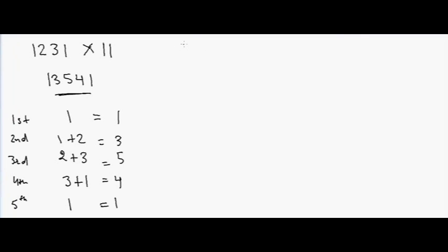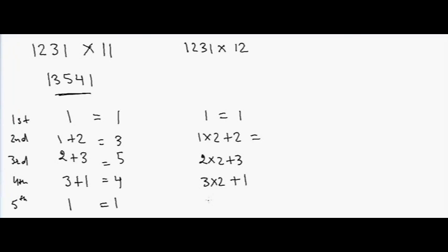Again, if I have 1231 and I want to multiply by 12: first digit is 1, then 1×2 plus 2 is 4, then 2×2 plus 3 is 7, then 3×2 plus 1 is 7, and finally 1×2 is 2. So the answer is 14772.